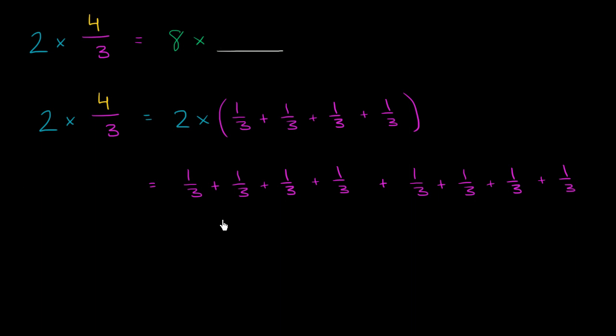And so this is clearly equal to, this is equal to 8 times 1 third. I have 8 one-thirds there. So going back to the original question, what is this equal to? 2 times 4 thirds is the same thing as 8 times 1 third. And we've already seen that 8 times 1 third, well that's literally 8 thirds. So we could also write it like this: 8 over 3.